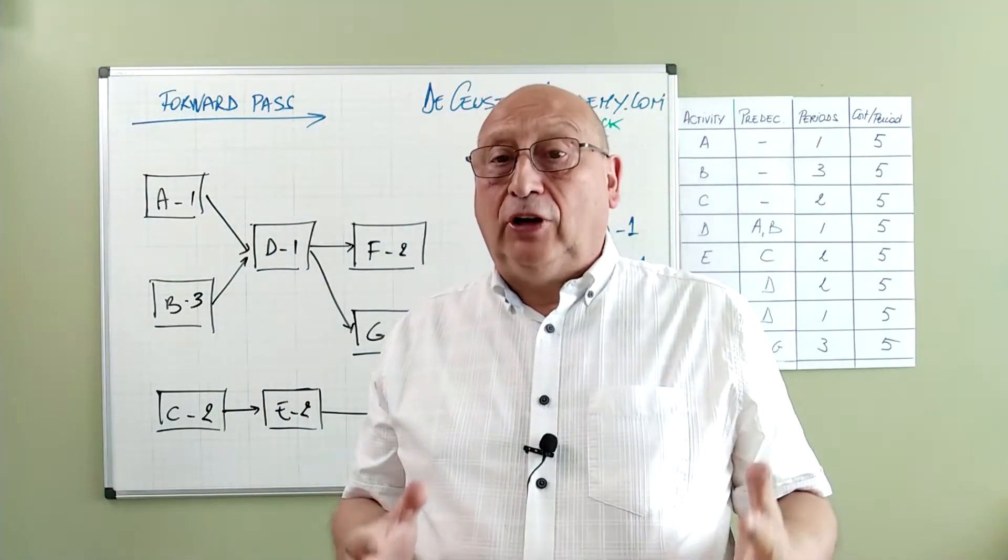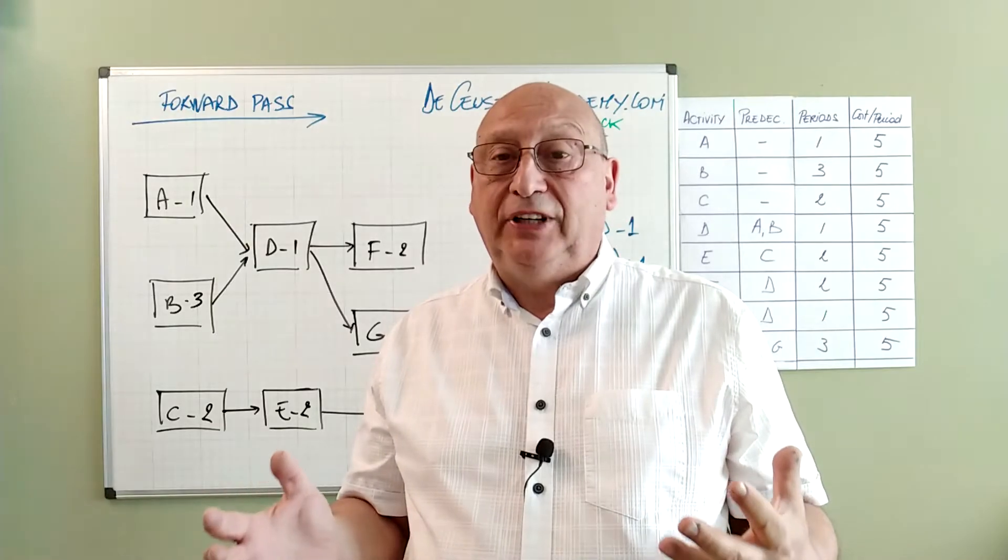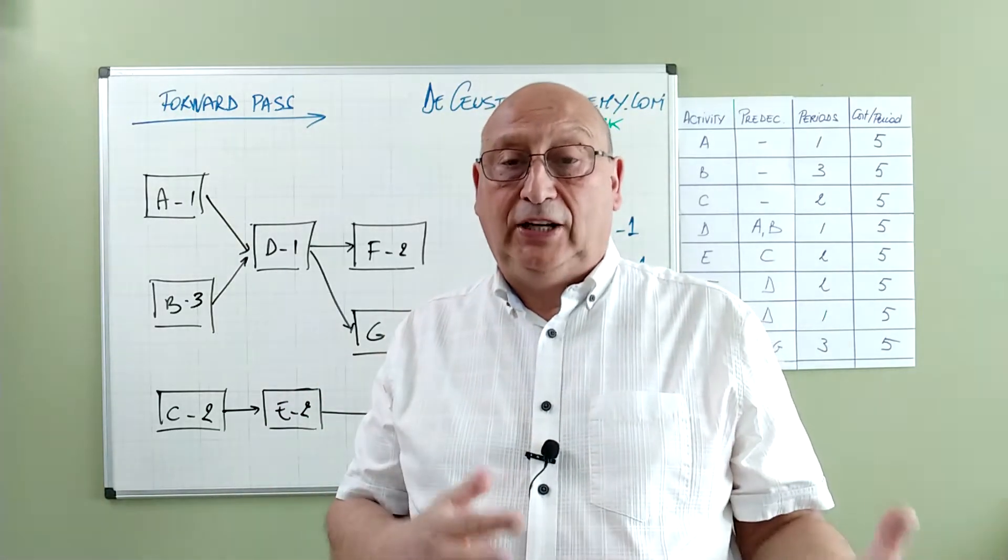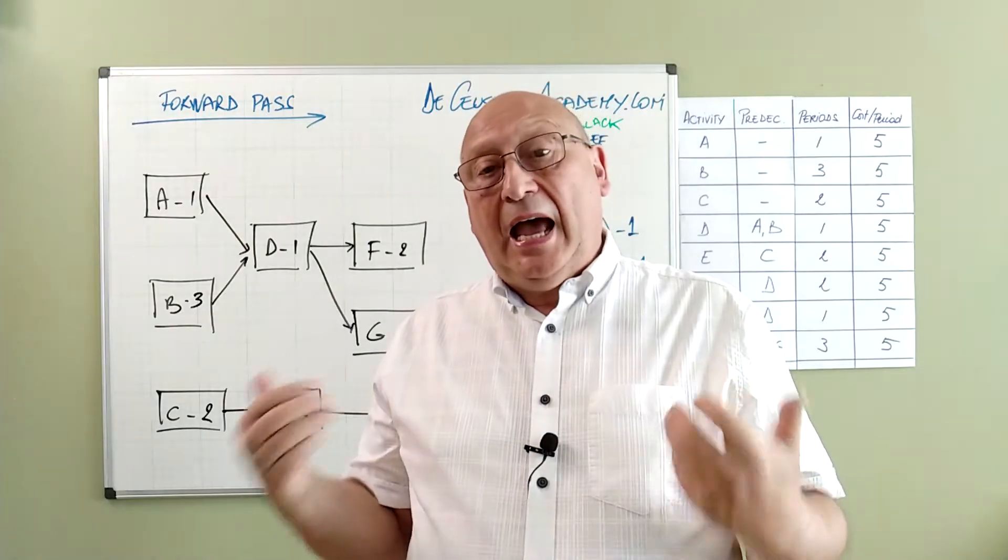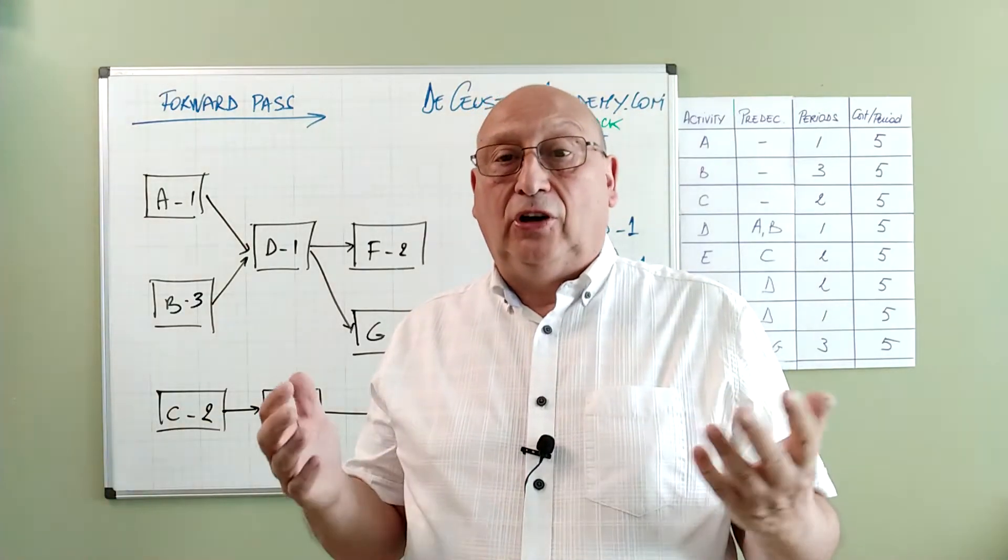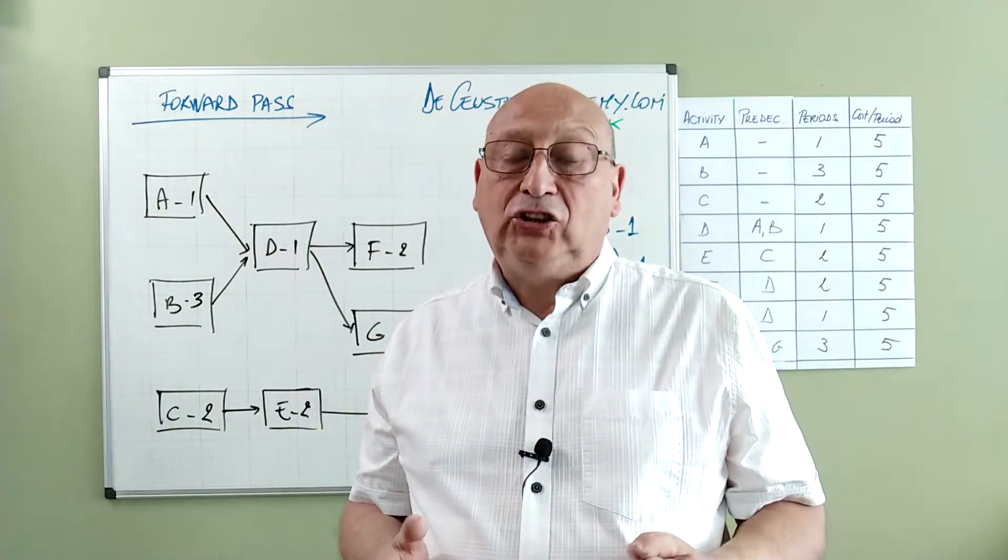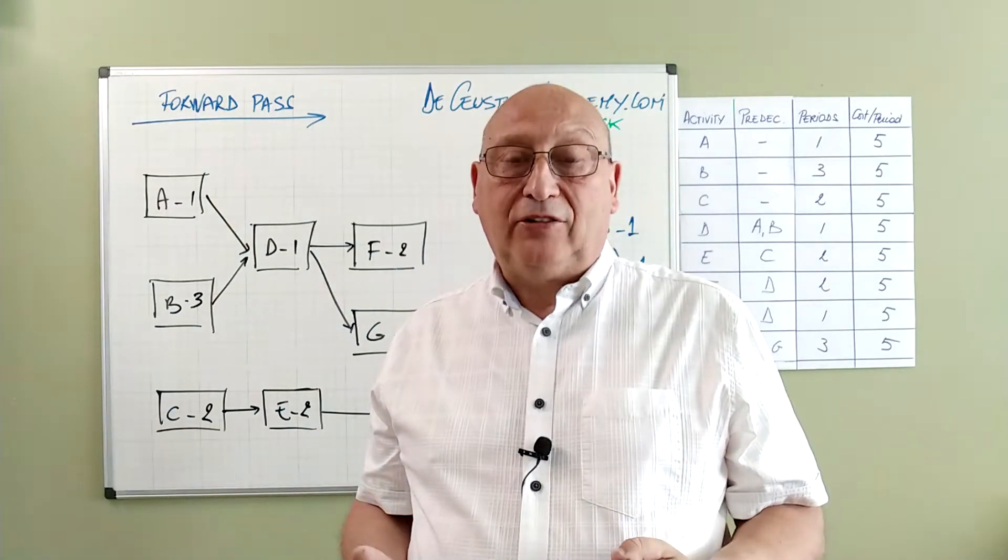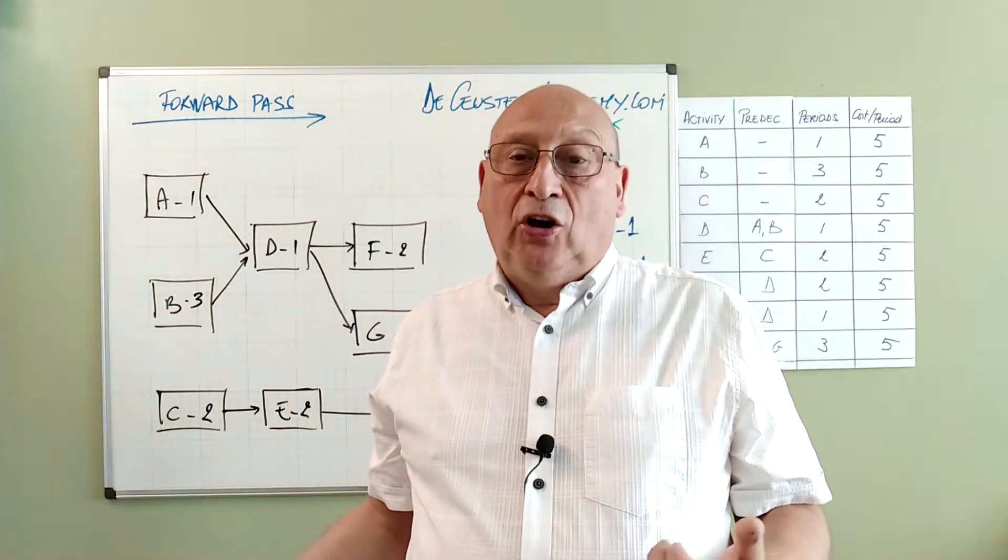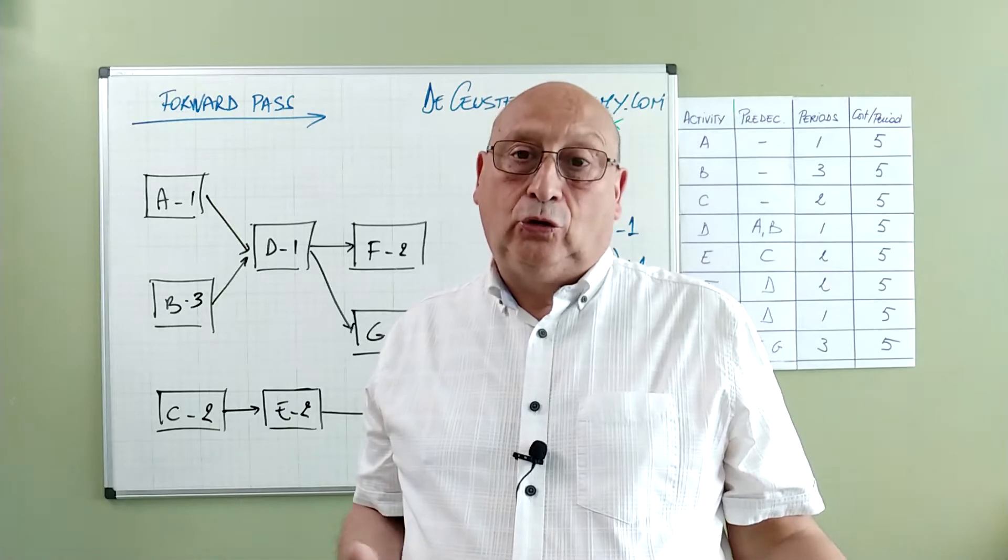We call the calculation of early start and early finish the forward pass. We calculate from left to right. And when we calculate the late start and the late finish we call it the backward pass. We calculate back from right to left.